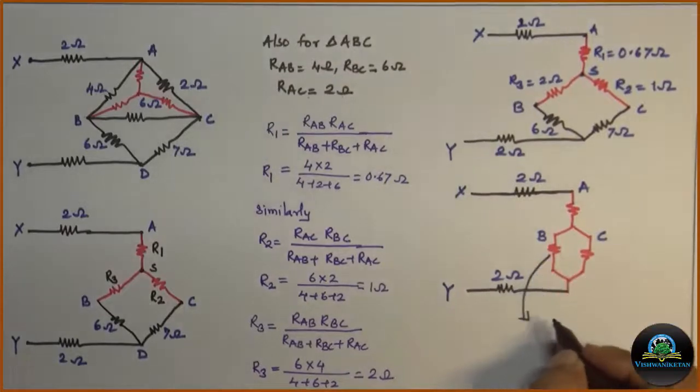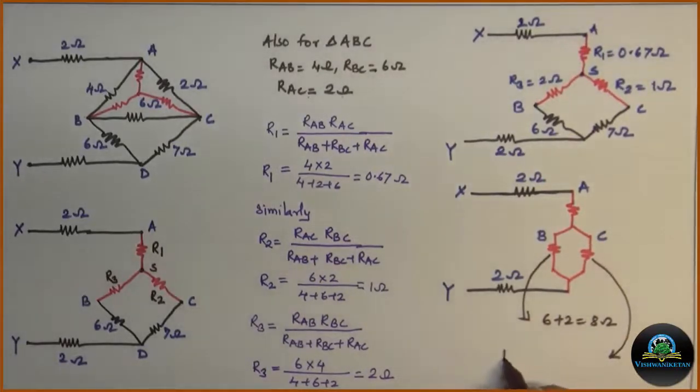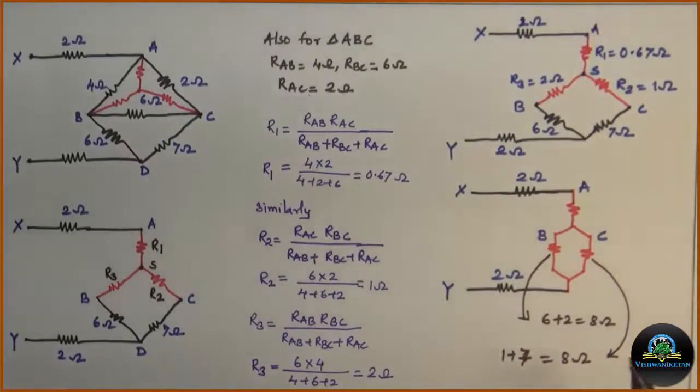This series resistor can be calculated as 6 plus 2, 8 ohm. And this resistance can be calculated as 1 plus 7 that is 8 ohm. Now in the diagram this resistance has value 8 ohm and this resistance has value 8 ohm.